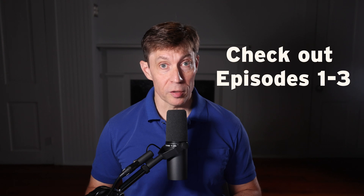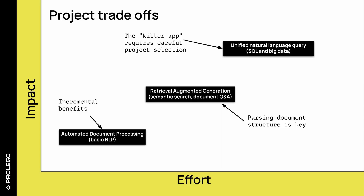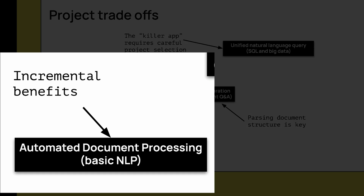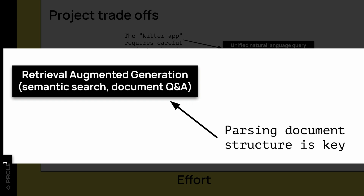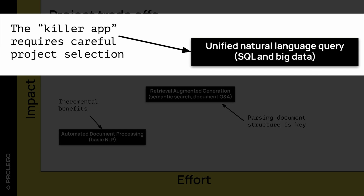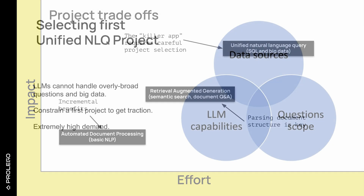These are the three most common initial generative AI projects, and I cover each in greater depth in episodes one, two, and three. Let's now decide which one is best for you. This diagram describes the trade-off between impact and effort. Automated document processing is the easiest because it uses straightforward calls to the large language model; however, the results are usually incremental efficiency improvements. RAG solutions enable complex data connections and unlock hidden value; however, the challenge of parsing document structure is frequently overlooked in simple examples. Finally, unified natural language query is the most complex because of the LLM's context window size limitations; however, it is the biggest impact and the holy grail of business intelligence.